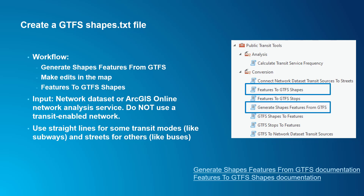So the workflow is as follows. First, run the Generate Shapes Features from GTFS tool to estimate the shapes based on Network Analyst. Second, make any edits you need to in the map. And then finally, run the Features to GTFS Shapes tool to generate a new shapes.txt file and update the associated GTFS files with Shape ID and Linear Referencing information.